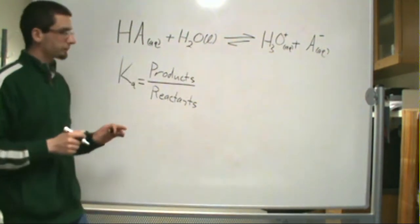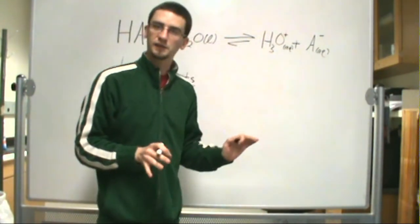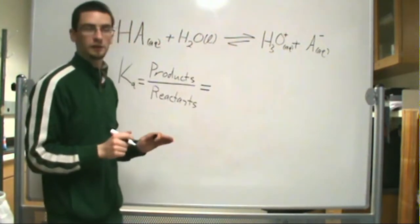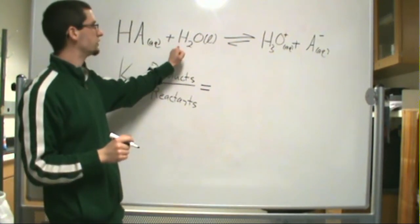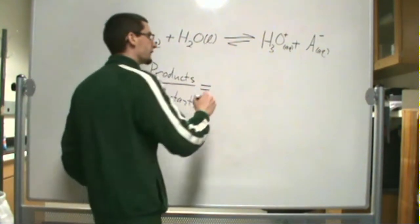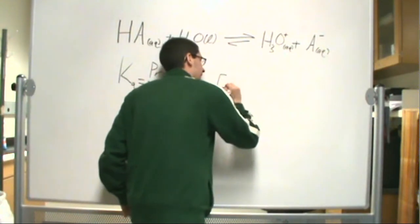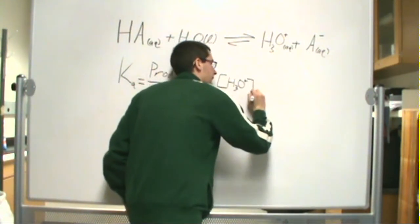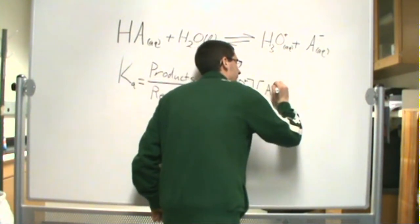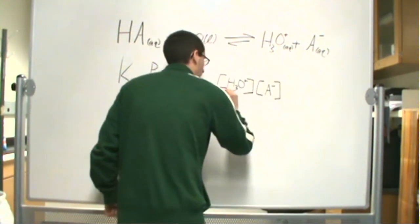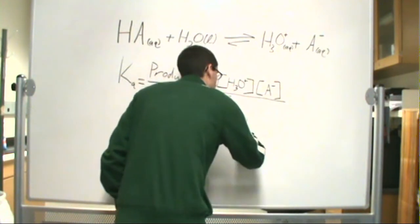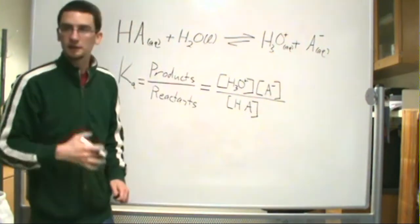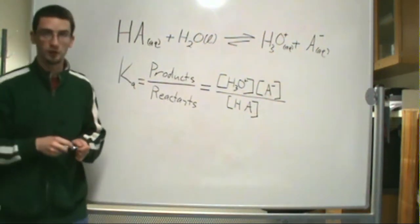Just as we follow with equilibrium constants, we exclude pure solids and pure liquids. So we're not going to include the H2O in our equilibrium constant. So our equilibrium constant would look something along the lines of H3O+ times A- all over the concentration of our original acid, HA. And that's how we define Ka, at least for monoprotic acid.